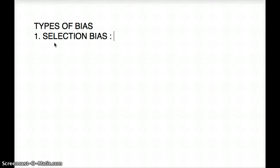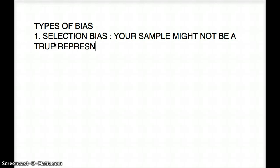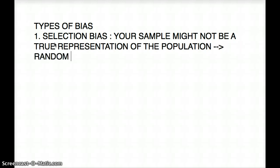The first one is selection bias. Selection bias is whenever you are taking a sample for your experiment, and sometimes those samples might not be a true representation of what is really out there — of the true population. Your sample might not be a true representation of the population. The solution is you should be taking random, independent samples.